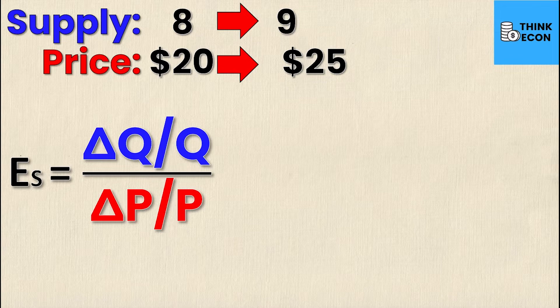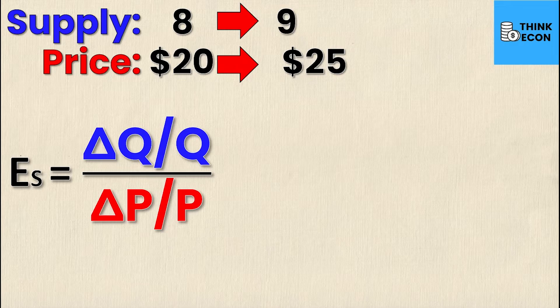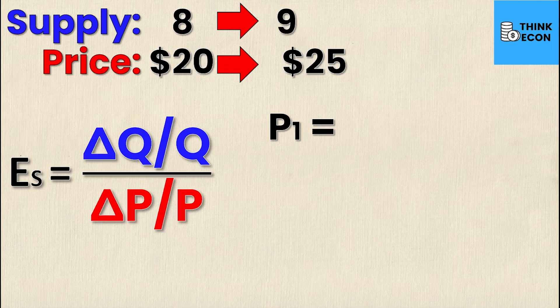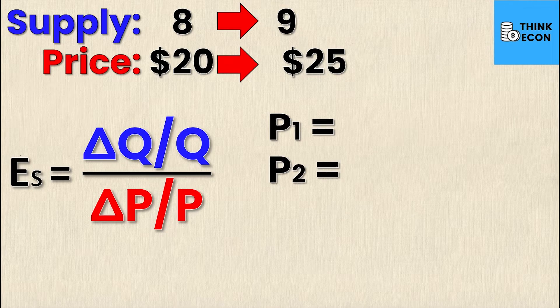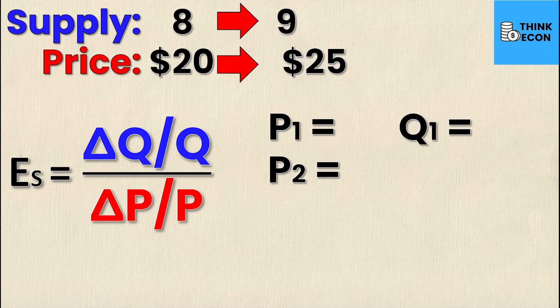And in order for there to be a change in something, I must have an old value and a new value. So in this case I need an old price or P1, a new price P2, an old quantity, and a new quantity.